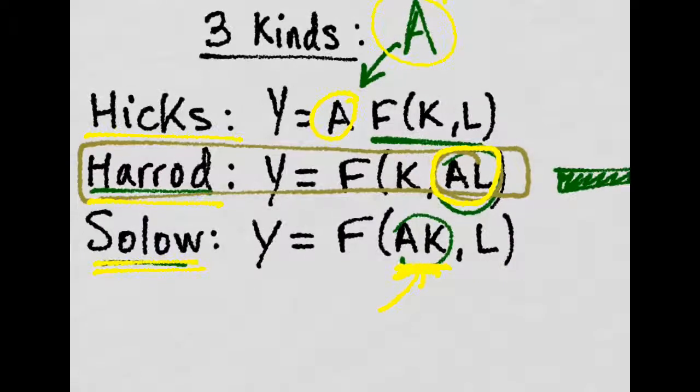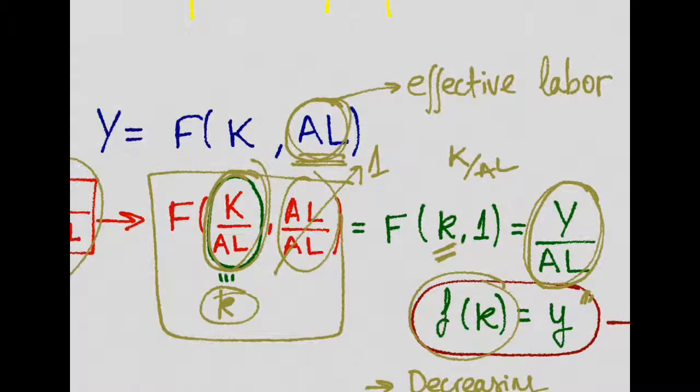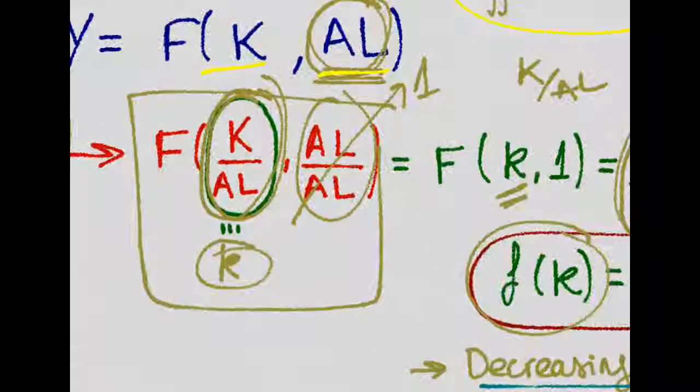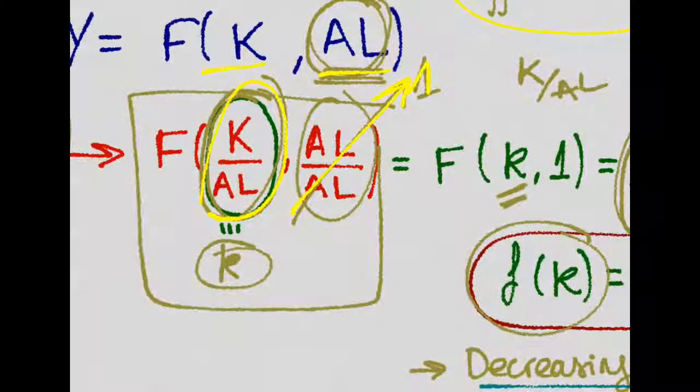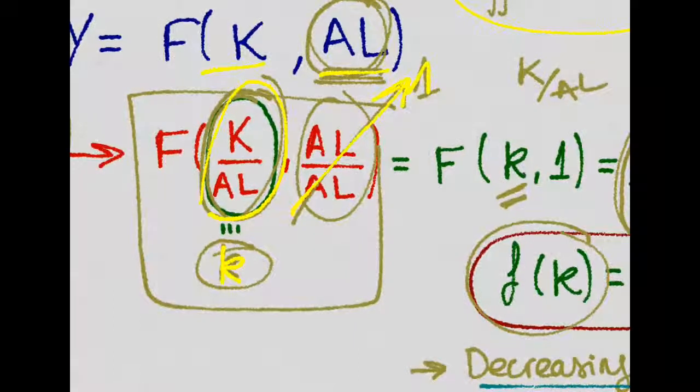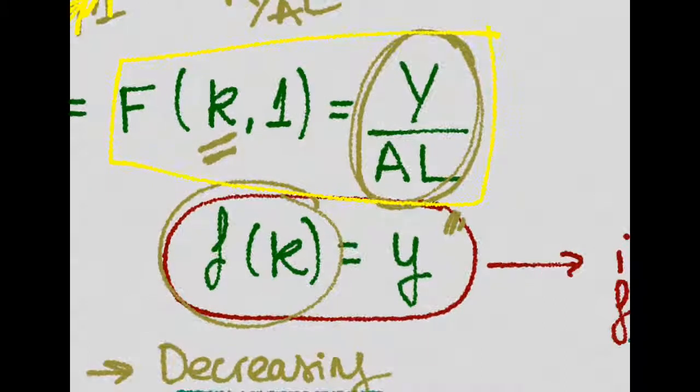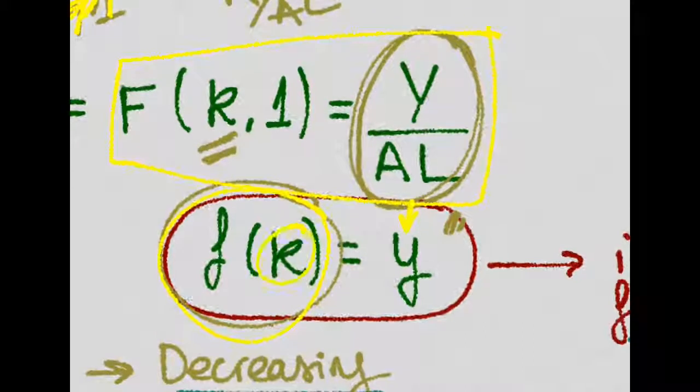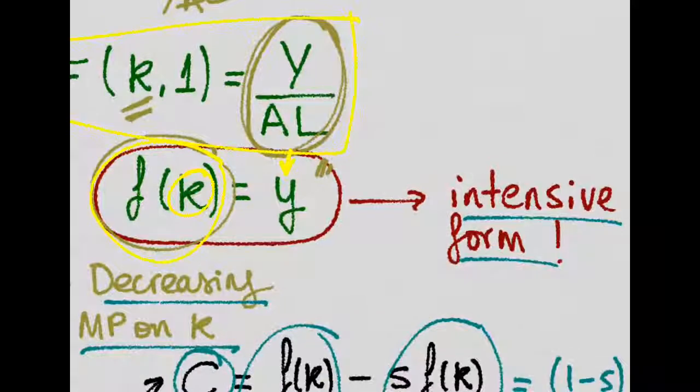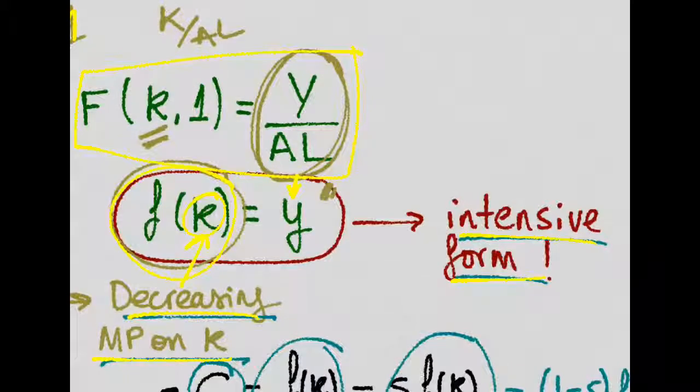We want to define an intensive production function. We divide every input over effective labor. So this will be k over effective labor, which from now on will be denoted by small k. This function of small k and 1 is just y over effective labor, which we're going to call small y, a function of this small k. Remember, capital over effective labor. That is the intensive form, which exhibits decreasing marginal productivity on small k.